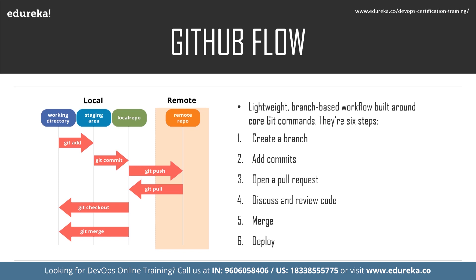The fifth step is merge — upon clicking merge, GitHub automatically performs the equivalent of a local git merge operation, and also keeps the entire branch development history on the merged pull request. The sixth and last step is deploy — teams can choose the best release cycles or incorporate continuous integration tools, operating with the assurance that code on the deployment branch has gone through a robust workflow.